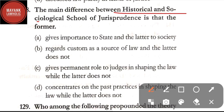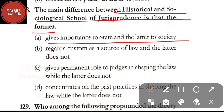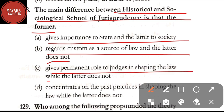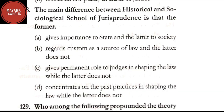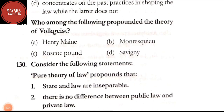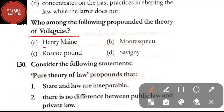Question number 128: the main difference between historical and sociological school of jurisprudence is — option A: the former gives importance to state and the latter to society; option B: regards custom as a source of law and the latter does not; option C: gives permanent role to judges in shaping the law while the latter does not; option D: concentrates on past practices in shaping the law while the latter does not. The correct answer is option D. Question number 129: who propounded the theory of Volksgeist — option A: Henry Maine; option B: Montesquieu; option C: Roscoe Pound; option D: Savigny. The correct answer is option D, Savigny.